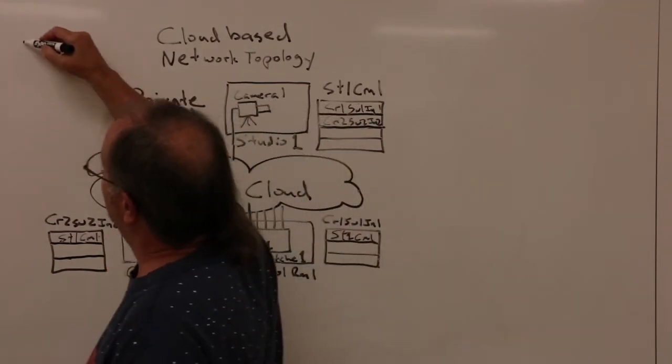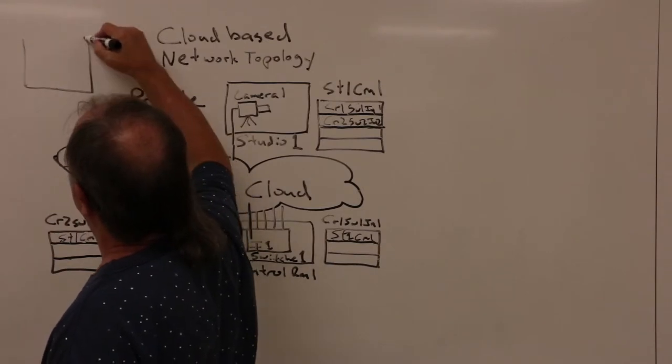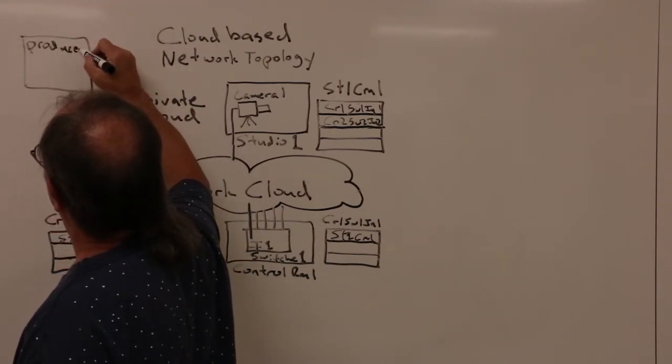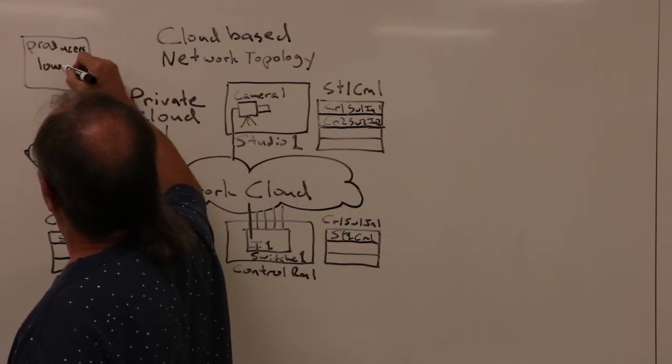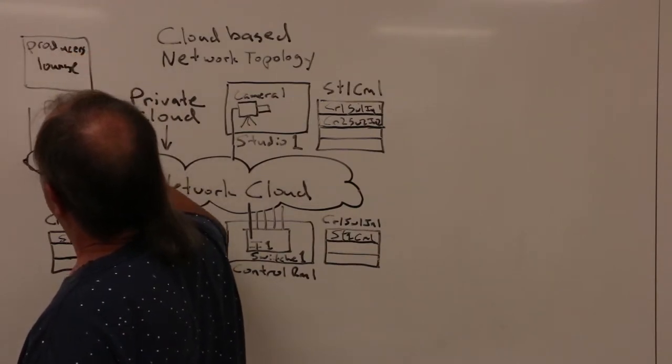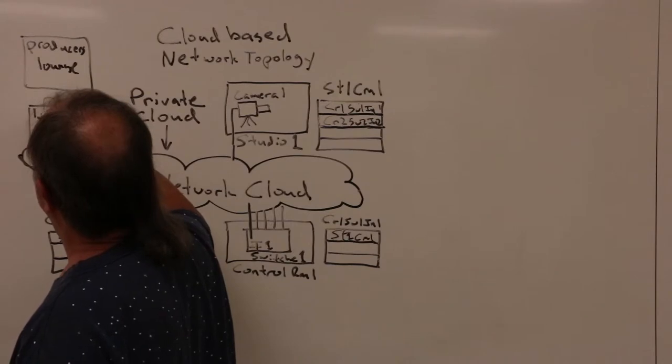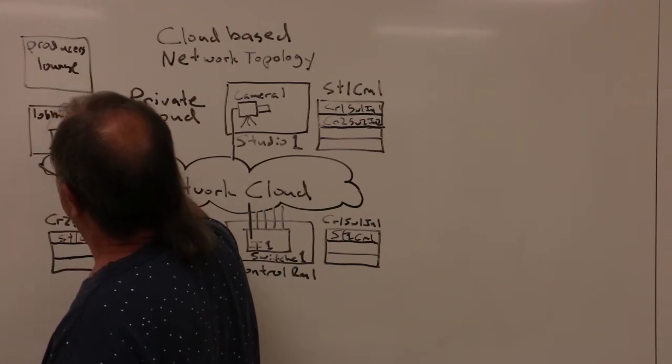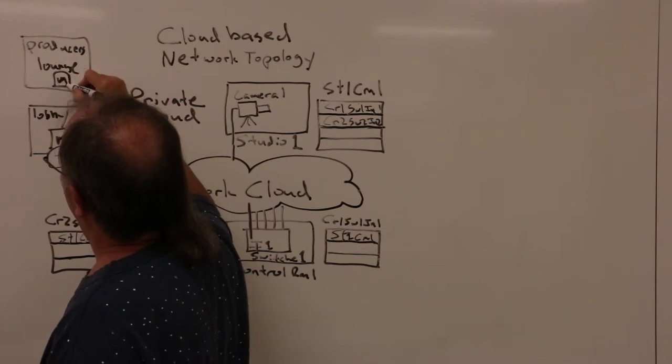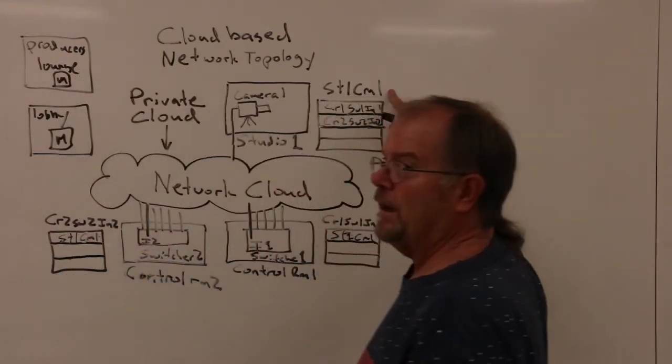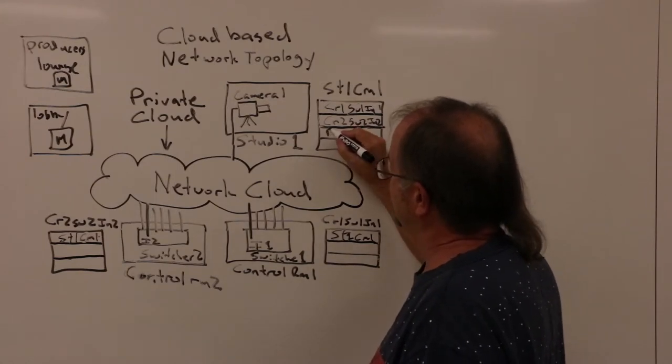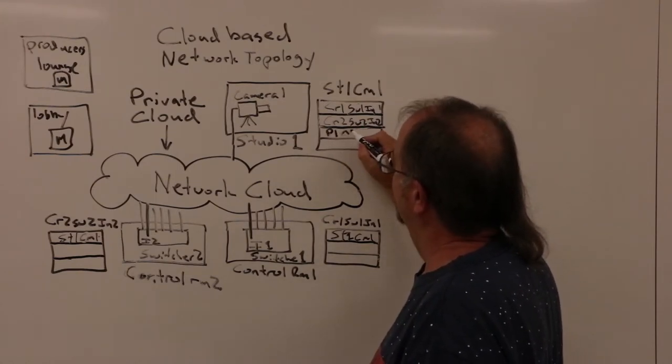Likewise, if there was say a production lounge and a lobby, and they each had monitors in them, we could say studio 1, camera 1, send your output to production lounge 1, monitor 1.